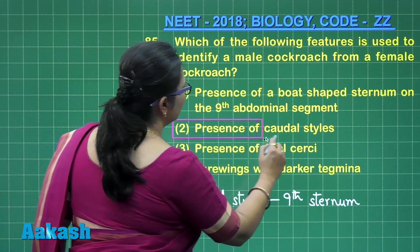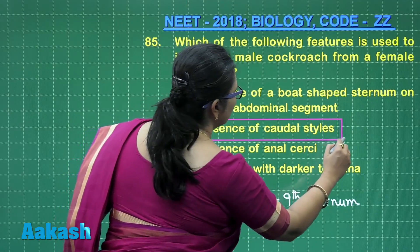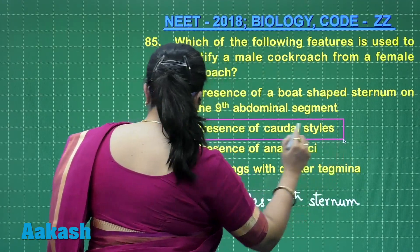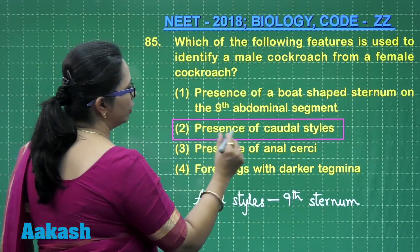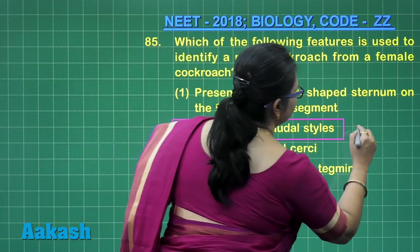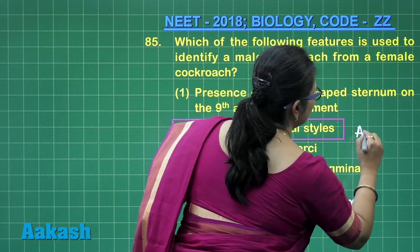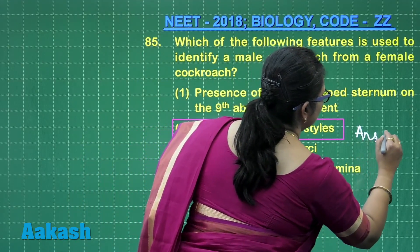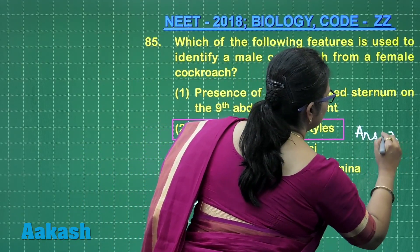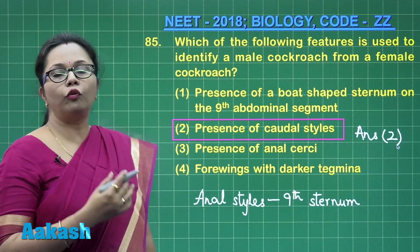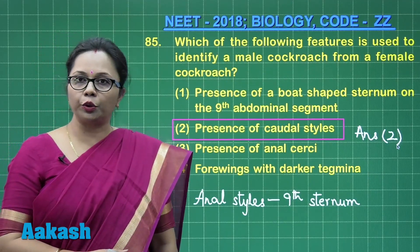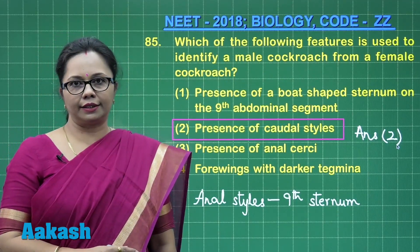are attached to the ninth sternum and are found only in males. So that is our correct answer — option two is right. Moving on to the next question, 86.